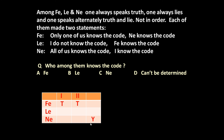Li says 'I do not know the code' — this is true because Ni knows the code, so Li does not. Li also says 'Phi knows the code' — this is false. So Li is true then false. Ni says 'All of us know the code' — this is false because Li does not know the code. Ni says 'I know the code' — this is true. So Ni is false then true.